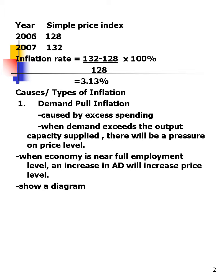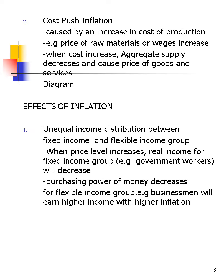There are two types of inflation. The first is demand-pull inflation, which is caused by excess spending. People have more money, but there is a limited supply or limited factors of production, which forces prices to increase. Demand-pull inflation occurs when the economy is near full employment and an increase in aggregate demand raises the price level. Please find the diagram for this.